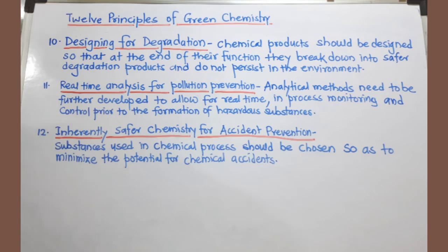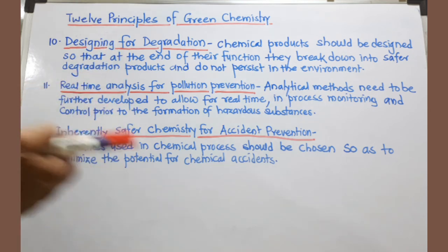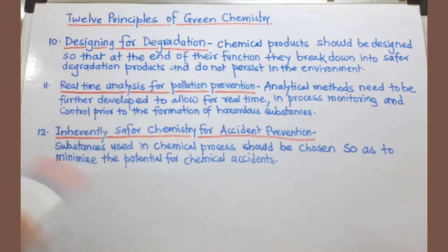The twelfth and final principle is inherently safer chemistry for accident prevention. Whatever chemicals we select for chemical synthesis should have less potential for chemical accidents, so we can minimize such incidents. These are all 12 principles of green chemistry. We must follow all 12 principles in the synthesis of organic compounds to protect our environment. Thank you.